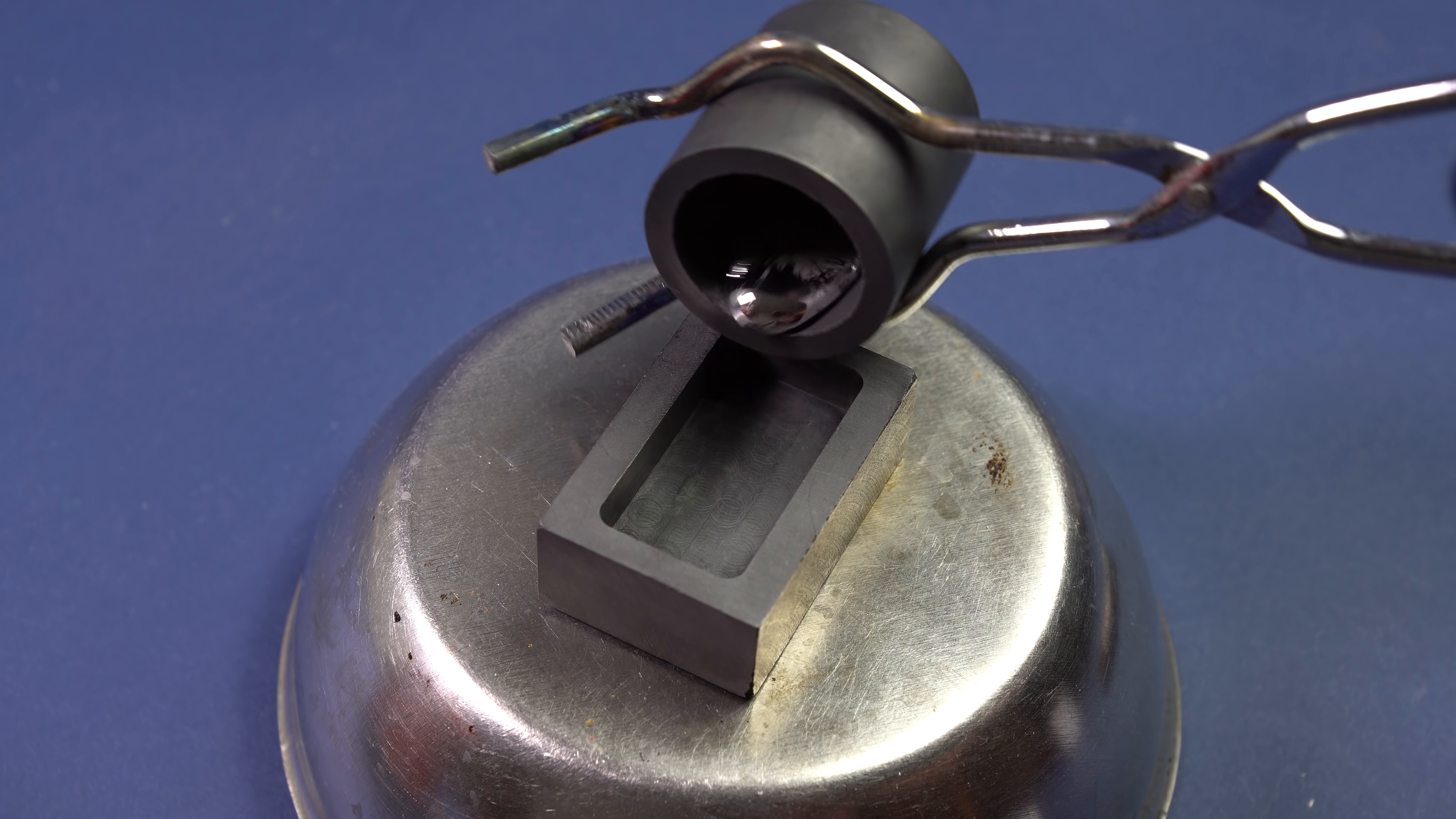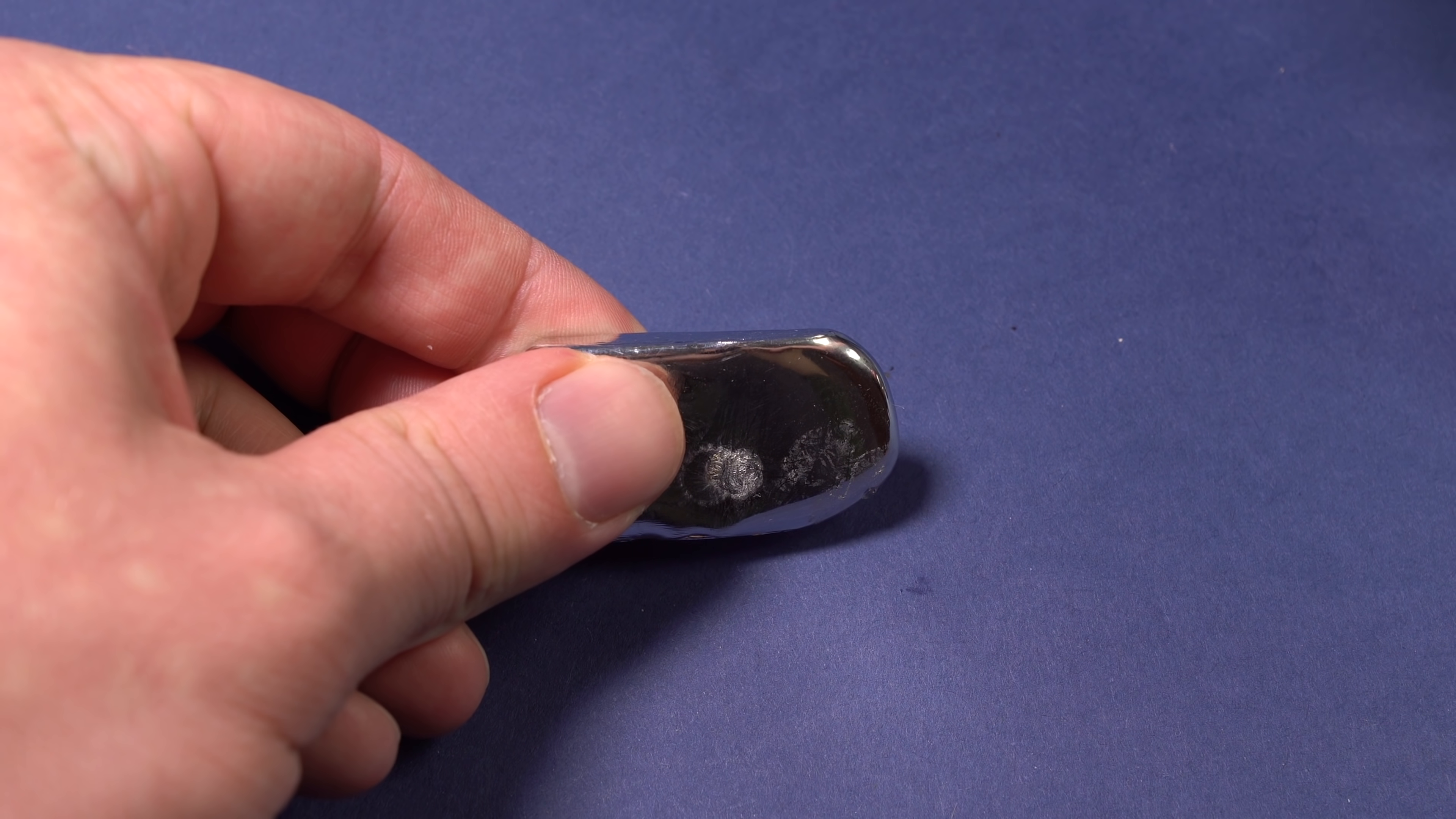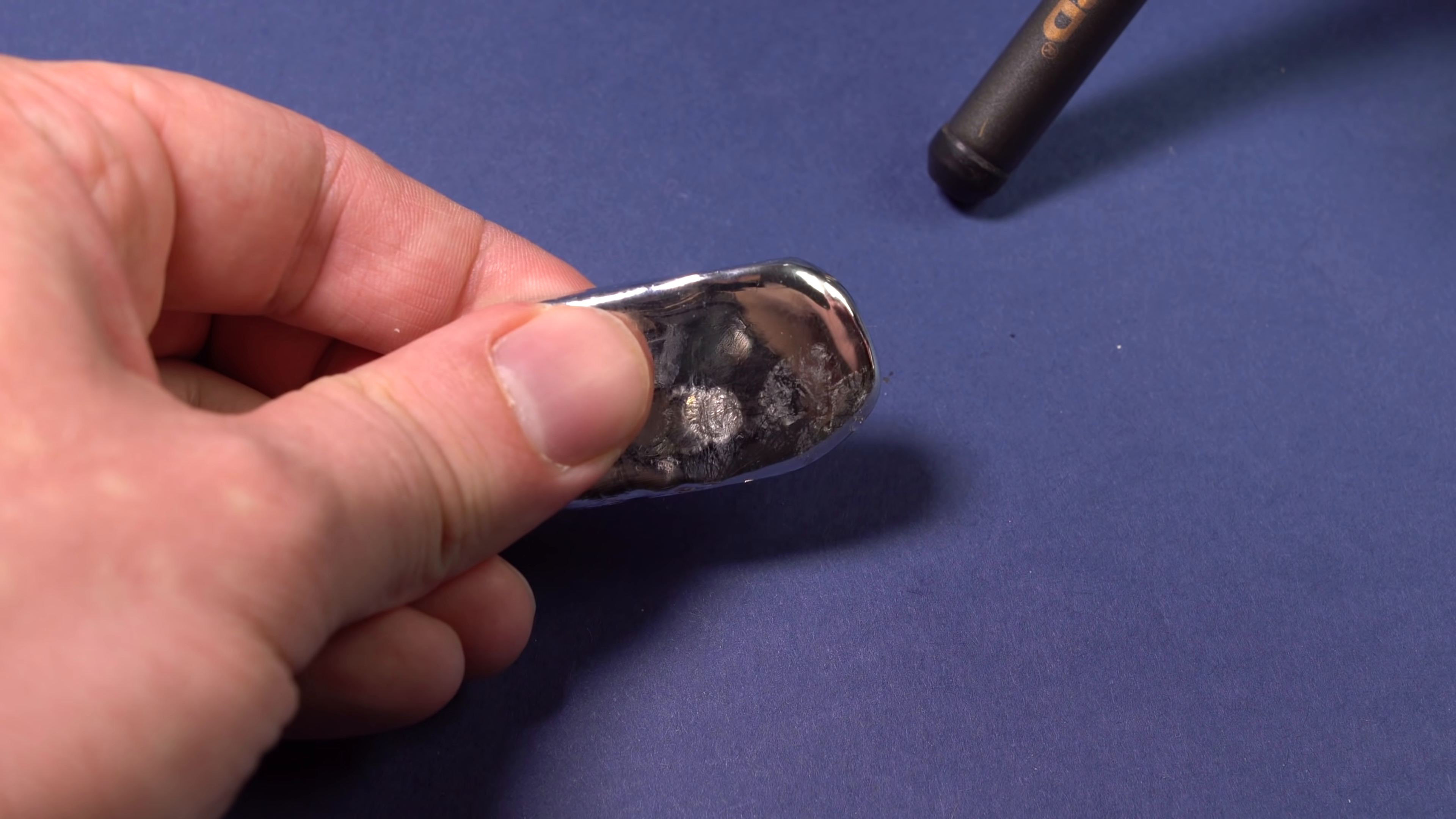However, metallic tin, in contrast to other metals, has one unique property called polymorphism. The metal that I'm holding in my hand is called beta form of tin or also white tin.